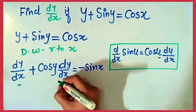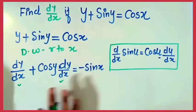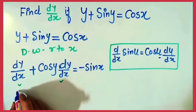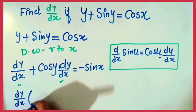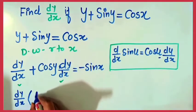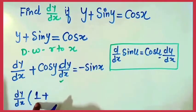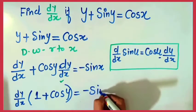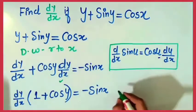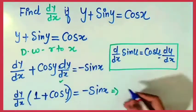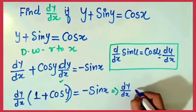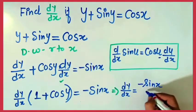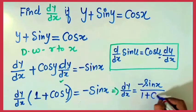We have differentiated the function, but we have to find dy/dx. Collect all the terms which have dy/dx. We can see two terms are having dy/dx. Take out dy/dx as a common factor. So dy/dx times (1 plus cos y) equals negative sin x. Finally, dy/dx is equal to negative sin x divided by (1 plus cos y).